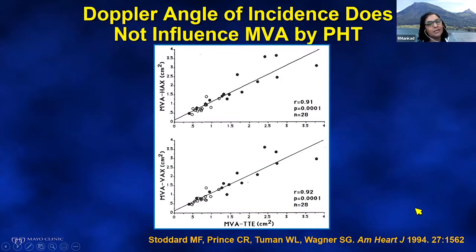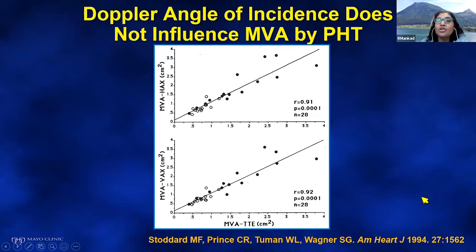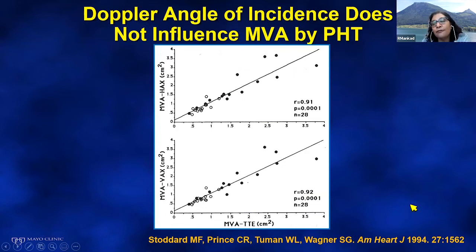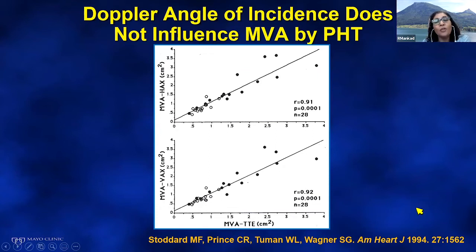A study confirmed that the Doppler angle of incidence did not influence the mitral valve area — whether lined up directly with flow or with an angle introduced, the mitral valve area obtained was unchanged. However, the mean gradient would be affected by that suboptimal alignment.